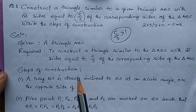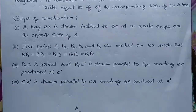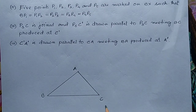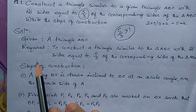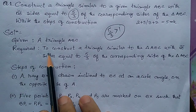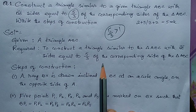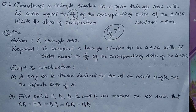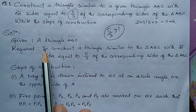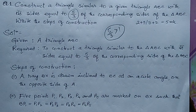Now we start the solution. Given: a triangle ABC. We draw triangle ABC — you don't need measurements since dimensions are not given, so simply draw triangle ABC. Required: to construct a triangle similar to triangle ABC with each side equal to 5/3 of the corresponding side. Now the steps of construction.